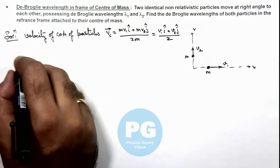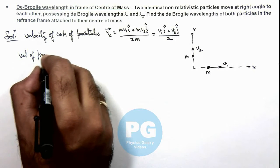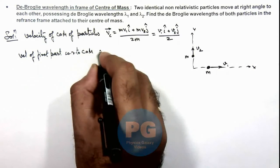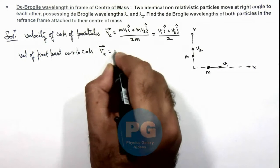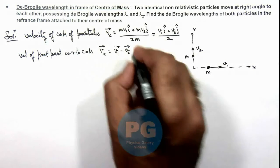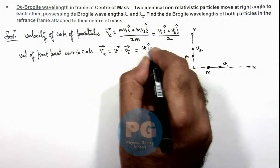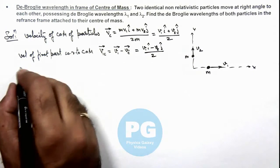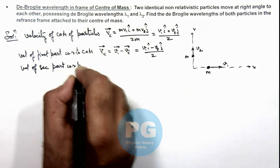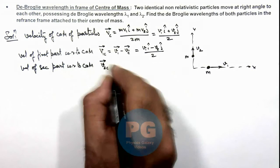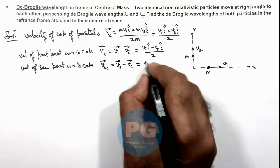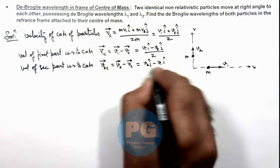Now we calculate the velocity of the first particle with respect to the center of mass: v1c = v1 vector minus v_c vector. Substituting the value of v_c, this gives v1*i-cap minus v2*j-cap divided by 2. Similarly, the velocity of the second particle with respect to the center of mass is v2c = v2 vector minus v_c vector, giving v2*j-cap minus v1*i-cap divided by 2.